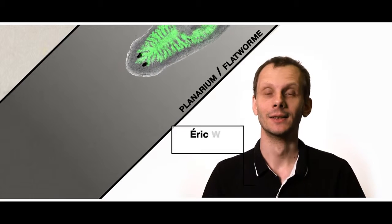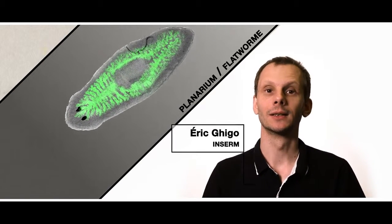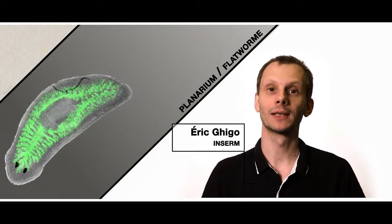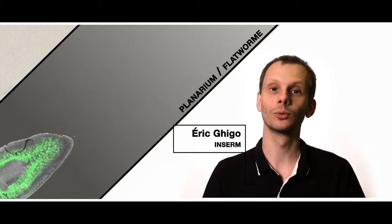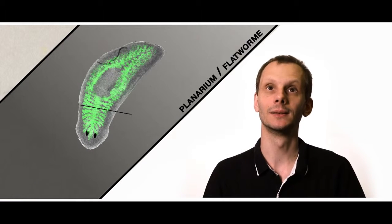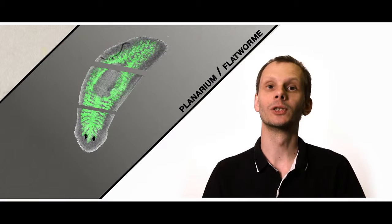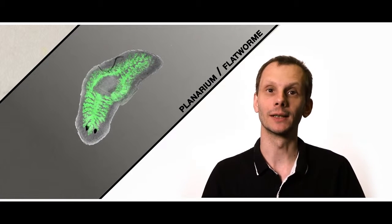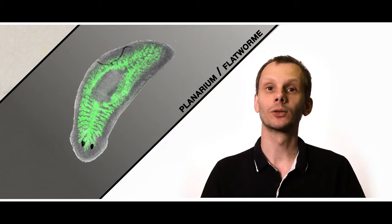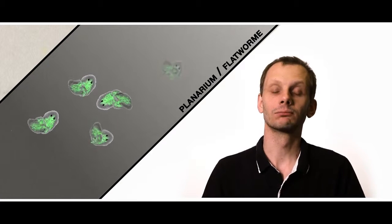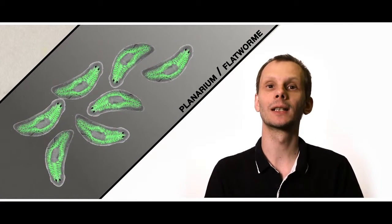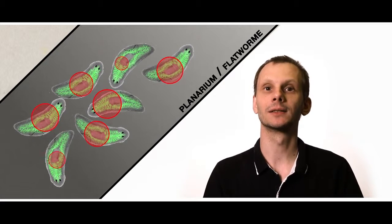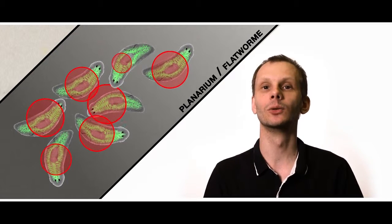We're studying a worm, the planarium, or flatworm. It's an invertebrate. We became interested in this worm because it has a strong survival capacity. It's an immortal worm. You can cut it into little pieces and it regenerates. So we asked ourselves, if it has this high capacity to regenerate, does it also have any special immune responses or ways to combat pathogens?